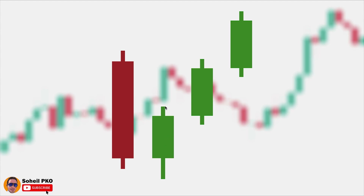The second candle is at least a short to medium green candle that must show buying pressure. It shouldn't be very short — it should not be a doji or spinning top — because we need to see buying pressure here, not indecision. The low of this candle should be lower than the low of the first candle.